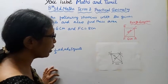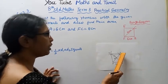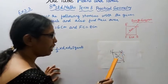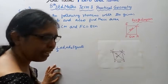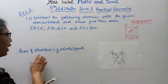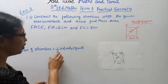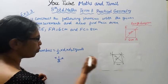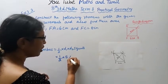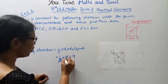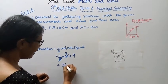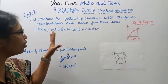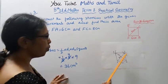FA is 6 cm, FC the diagonal is 8 cm, AE is 9 cm. Now the area of rhombus is half into D1 into D2 square units. Half into D1 is 8, D2 is 9: 4 nines are 36 cm squared.